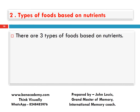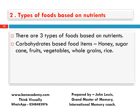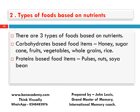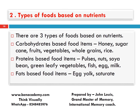There are three types of nutrients. What are they? Carbohydrates, protein, and fats. Carbohydrate-based food items are: honey, sugar cane, fruits, vegetables, whole grains, and rice. Protein-based food items: pulses, nuts, soya bean, green leafy vegetables, fish, egg, and milk. Fats-based food items: egg yolk, saturated oil, and meat.